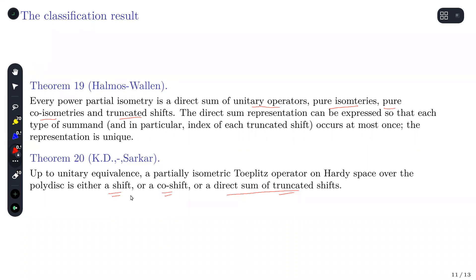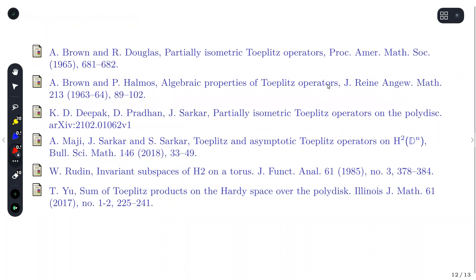I think I went very fast. The references are: Brown-Douglas was the original paper on partial isometric Toeplitz operators on the disk; Brown-Halmos established algebraic properties of Toeplitz operators. The paper presented here is joint work with Deepak Kedy and Jayadab Saka. Rudin's invariant subspace results and the commuting Toeplitz operator result for the polydisc were done by Tao Yu in 2017. Thank you.